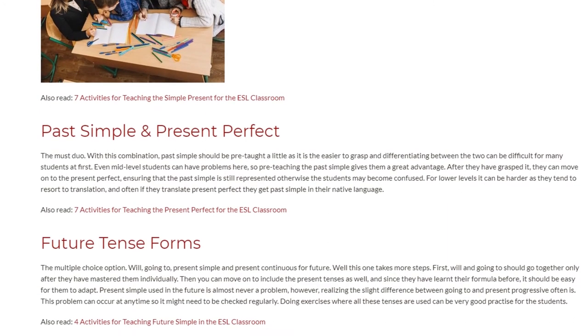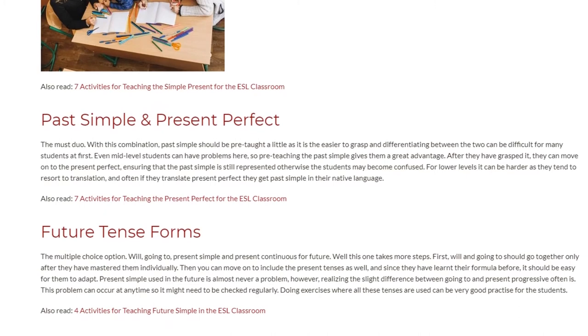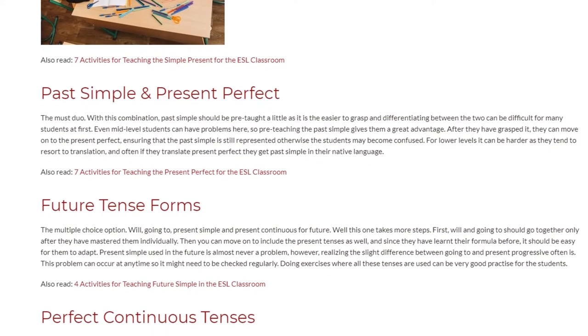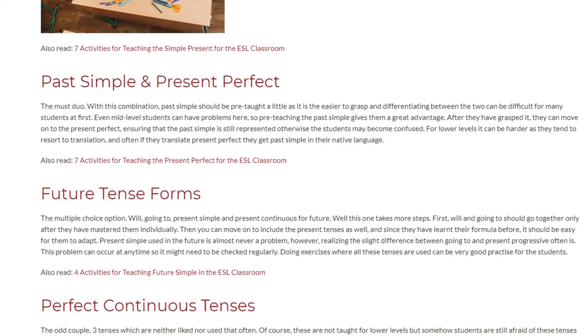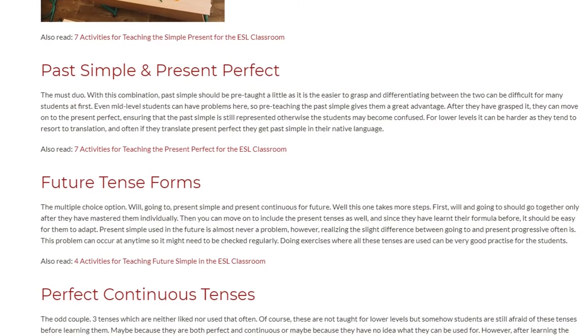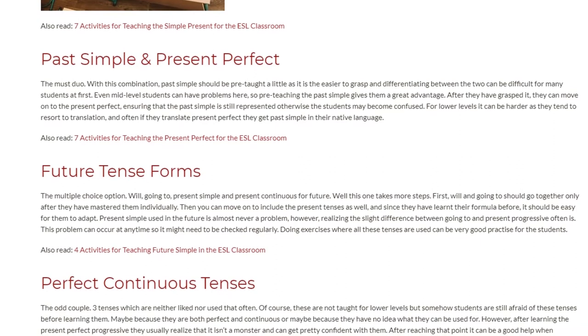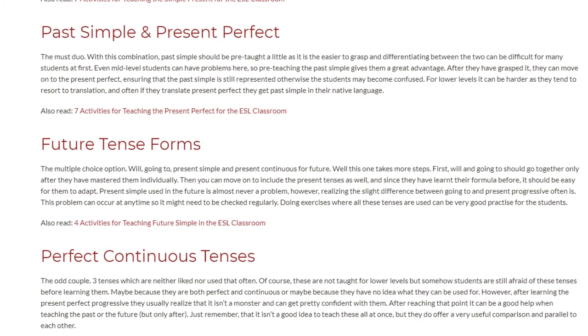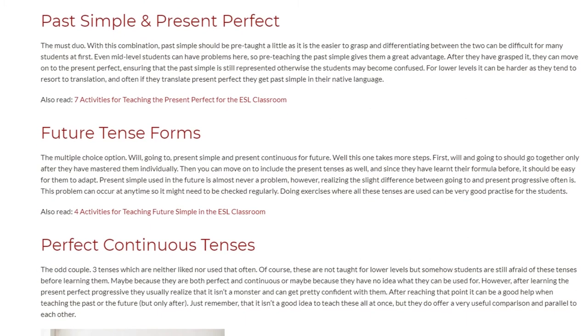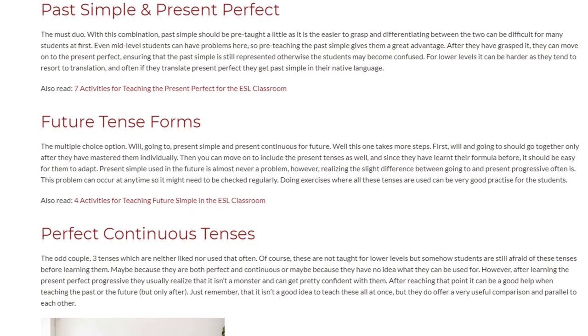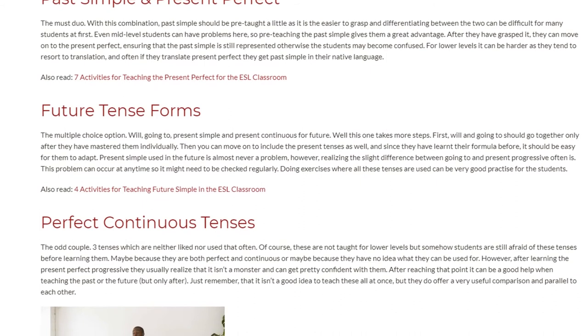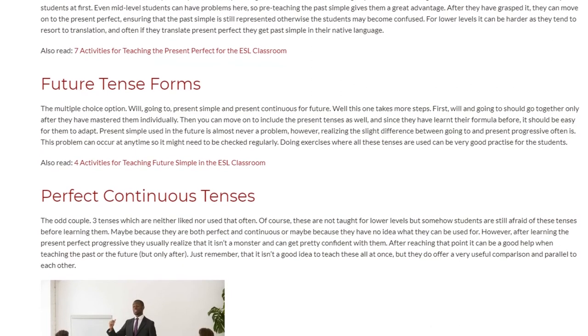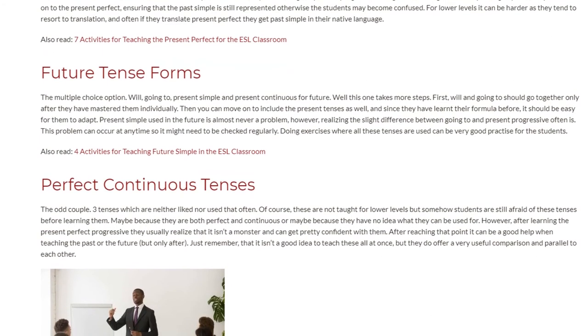Future Tense Forms: The multiple choice option. Will, Going To, Present Simple, and Present Continuous for future. Well, this one takes more steps. First, Will and Going To should go together only after they have mastered them individually. Then you can move on to include the Present Tenses as well, and since they have learnt their formula before, it should be easy for them to adapt. Present Simple used in the future is almost never a problem; however, realizing the slight difference between Going To and Present Progressive often is. This problem can occur at any time so it might need to be checked regularly. Doing exercises where all these tenses are used can be very good practice for the students.